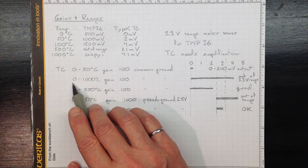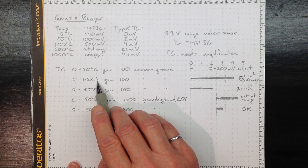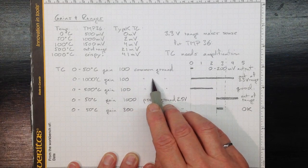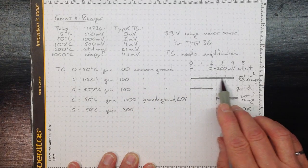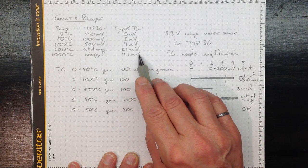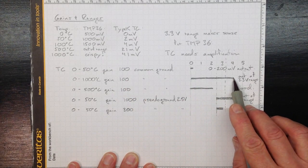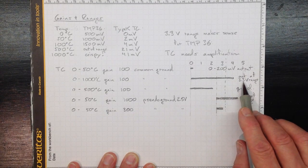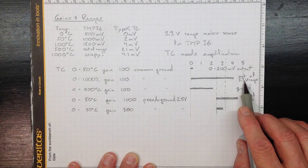On the other hand, if we're interested in temperatures going up quite high up to a thousand degrees Celsius, and we use that same gain of a hundred with a common ground, we'd go from zero up to about forty one hundred. Forty one millivolts times a hundred gain, so four point one volts, and we're out of the range that we can record with the 3.3 volt input on our Arduino.